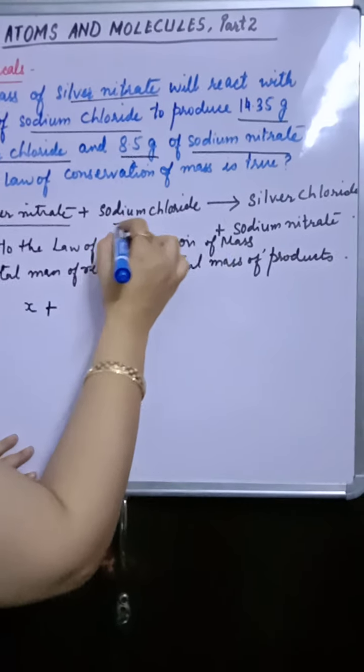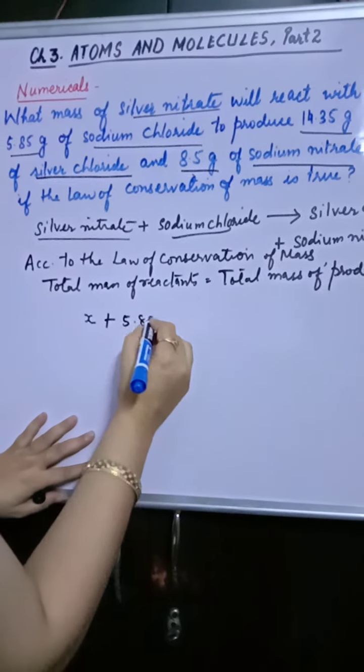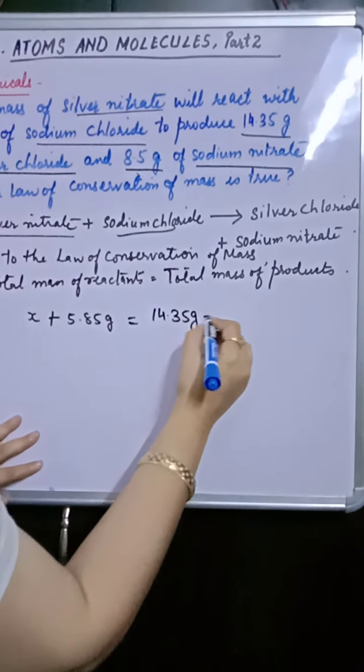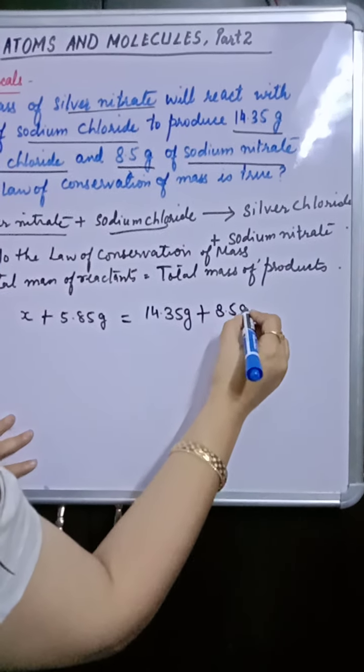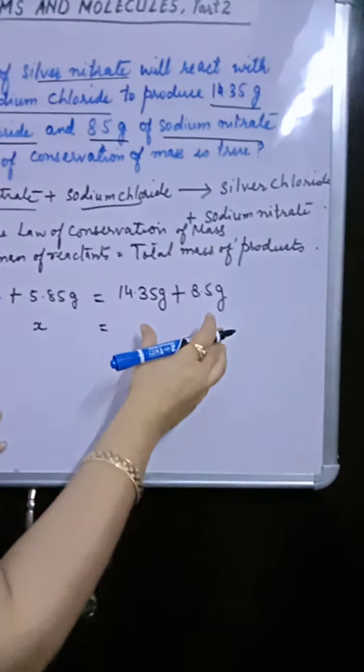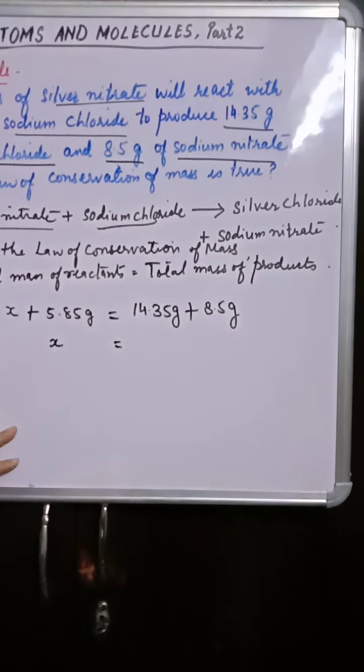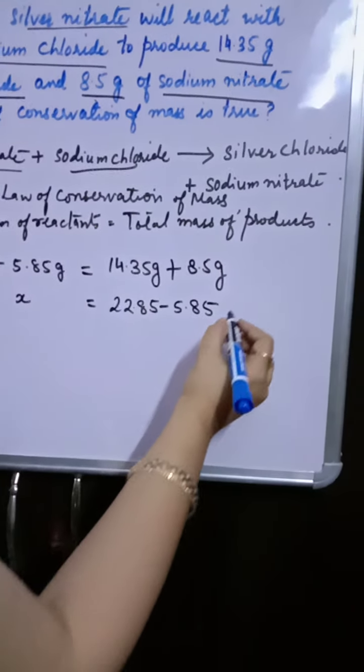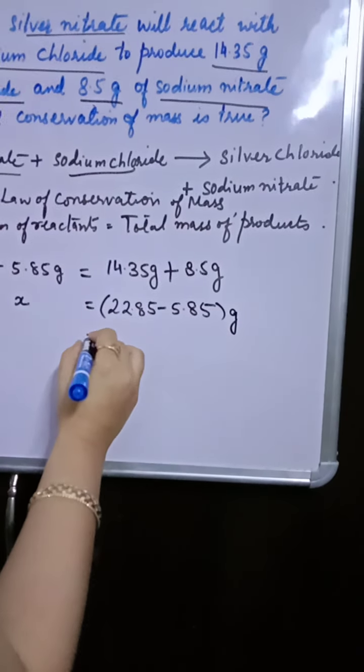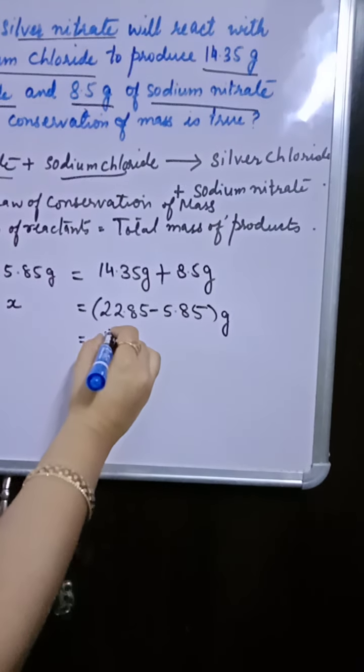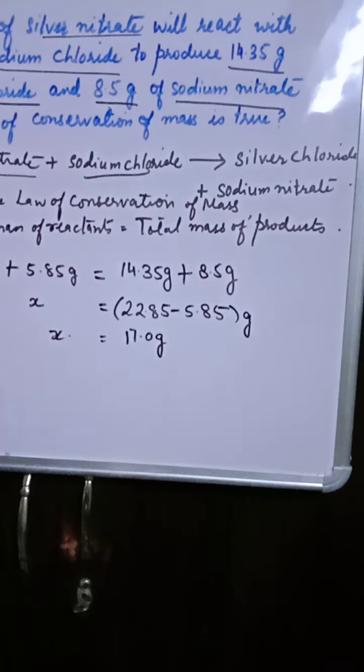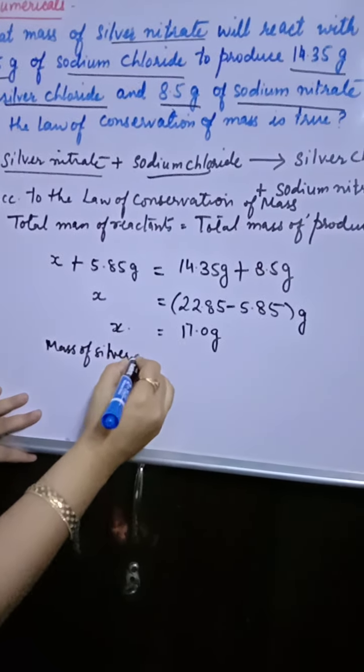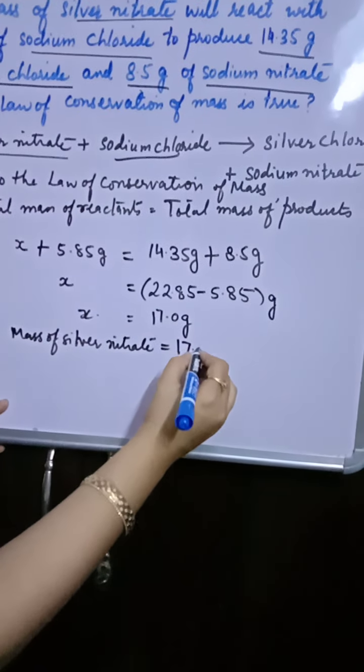Dusra humara reactant sodium chloride and its mass is 5.85 gram. 5.85 gram and products ki mass is 14.35 gram plus 8.5 gram. X, aap unknown value nikal sakte hai aaram se. Add these two values and then subtract 5.85 from that value. It will be equal to 22 minus 5.17 gram. So in this way mass of silver nitrate is? Mass of silver nitrate is equal to 17.0 gram.